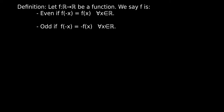Now let's learn a definition. Let's say we have a function f that goes from the real numbers into the real numbers. We say that f is even if f of minus x equals f of x for every real number x. The 'for every' is very important. And f is odd if f of minus x equals minus f of x, again for every x in the real numbers.